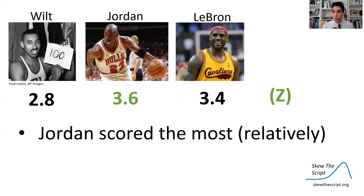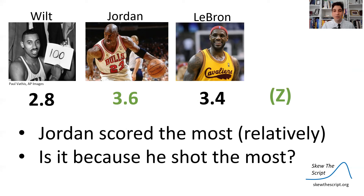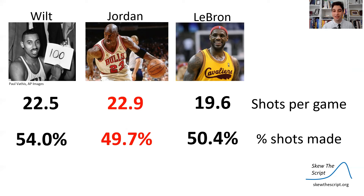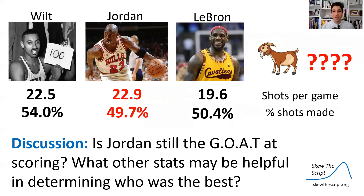Now we know that Jordan scored the most relatively — he was the most unusually high scorer compared to his era. But one question we might have: is it because he actually shot the most? Jordan had the most shots per game on average at almost 23, and also had the lowest percentage of shots made among the three. Given these new statistics, is Jordan still the greatest of all time at scoring? What other stats might be helpful? This is something you'll assess in class. That's it for today, statisticians — we'll see you next time on Skew the Script.